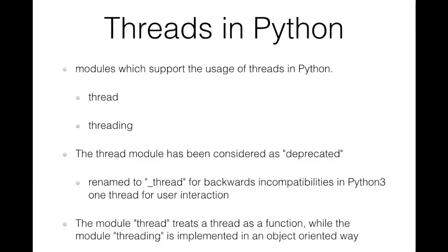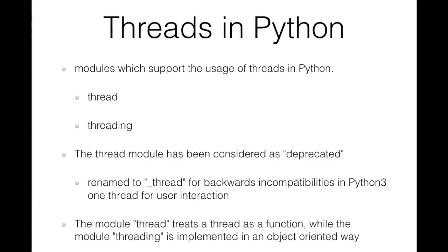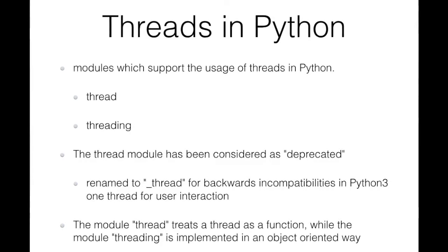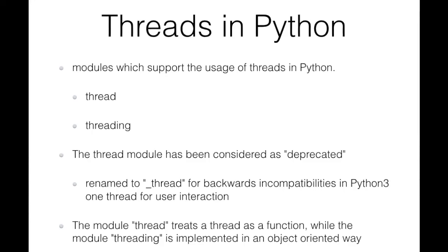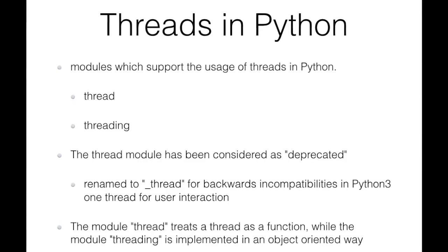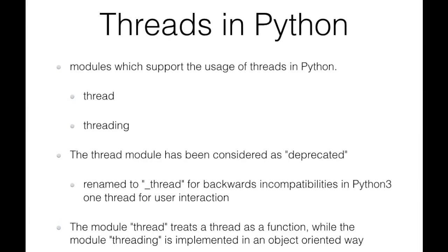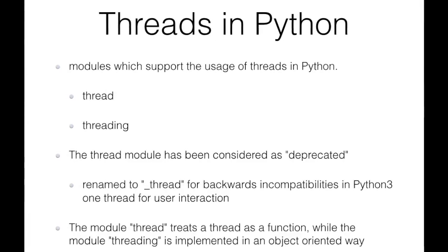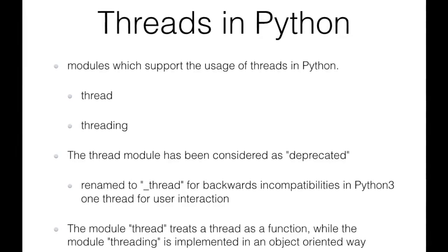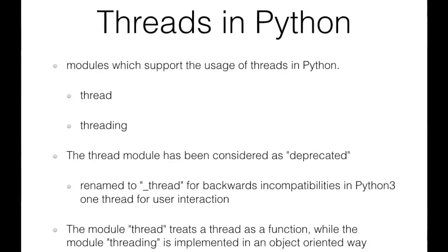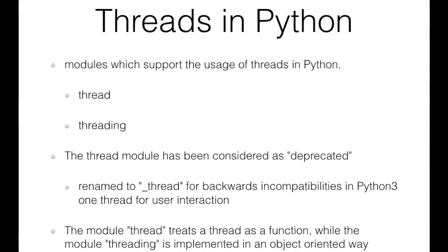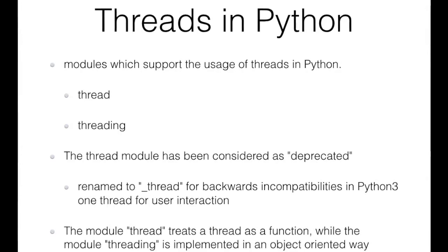In Python 3, the thread module is not directly available, but you can use it indirectly via underscore_thread, which maintains backward compatibility with previous versions of Python. The difference between the two modules is that the thread module treats the thread as a function, while the threading module is implemented in an object-oriented way. In the next videos we'll see how to use both modules to create and handle threads in Python.